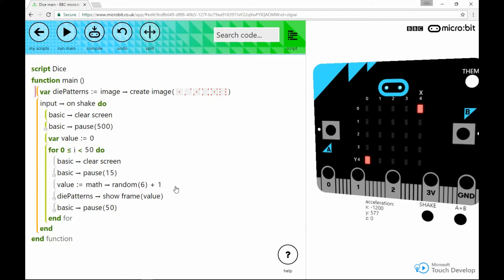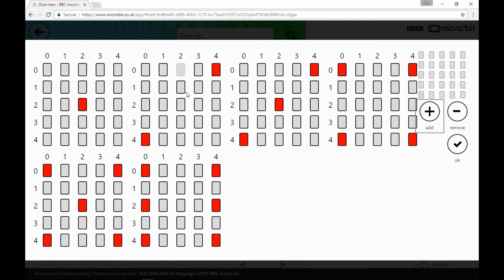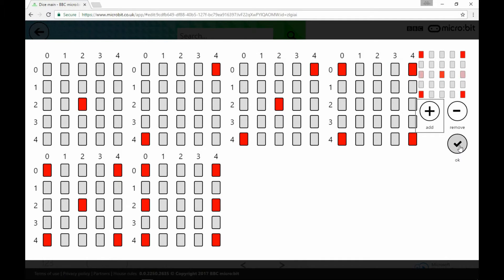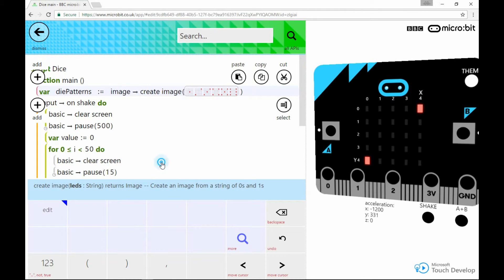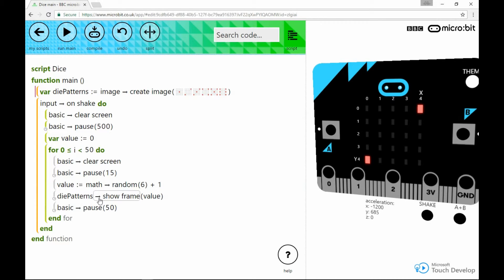And then here I'm actually displaying the graphic that corresponds to that. Die patterns is the array of images that I've created, and this function here, show frame, allows me to pick one of the six frames that I've created. So I've passed in the value, the one to six value that I just generated with random, and that gives me one of these graphics that we already defined earlier. So one corresponds to the one dot, six corresponds to the six dots here, and so on. And that's basically all there is to it.